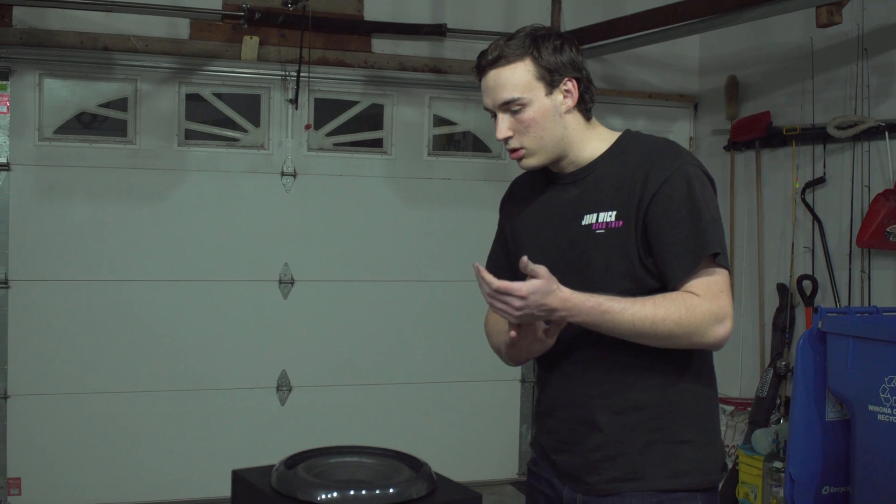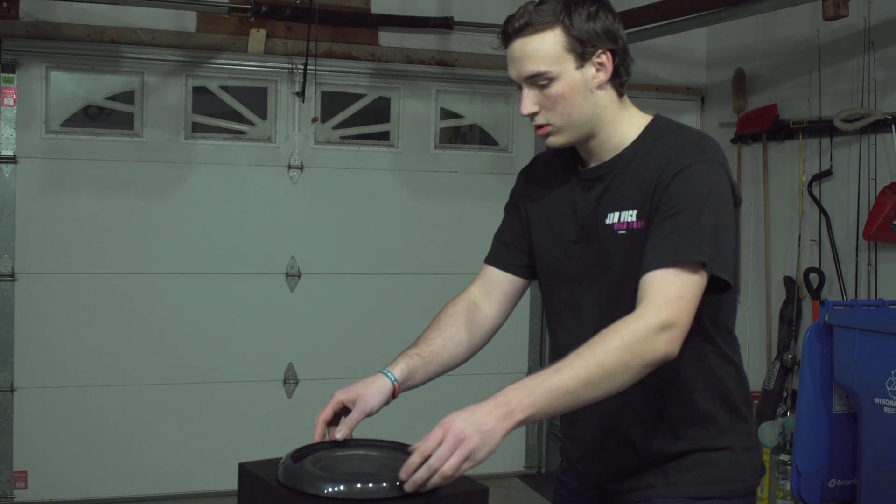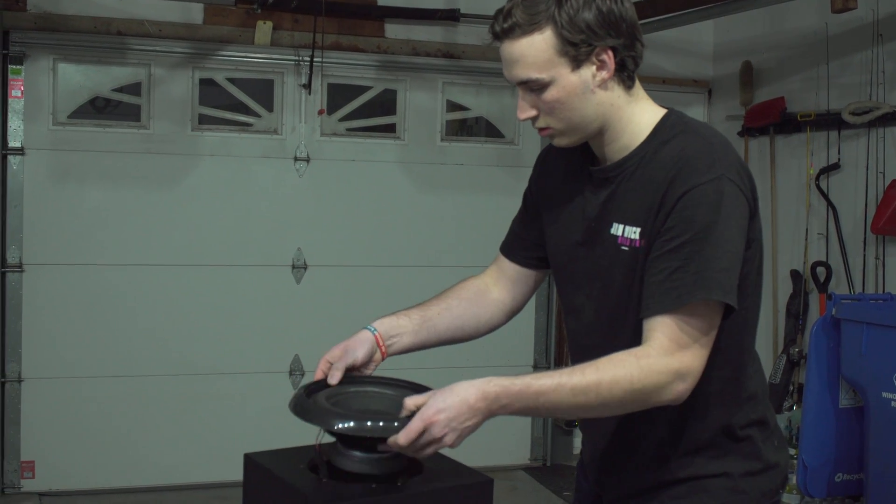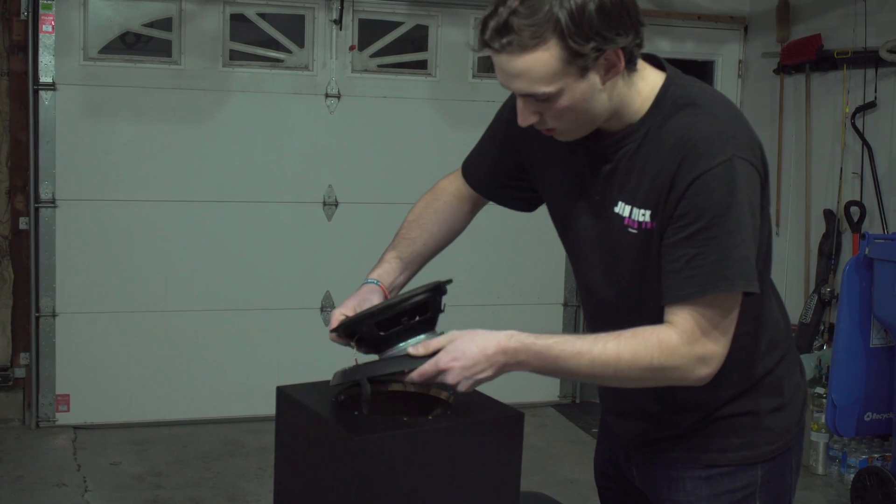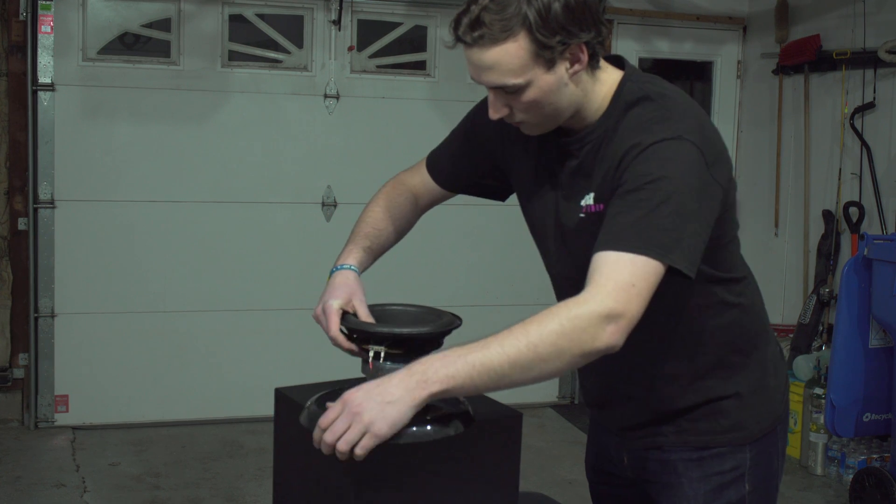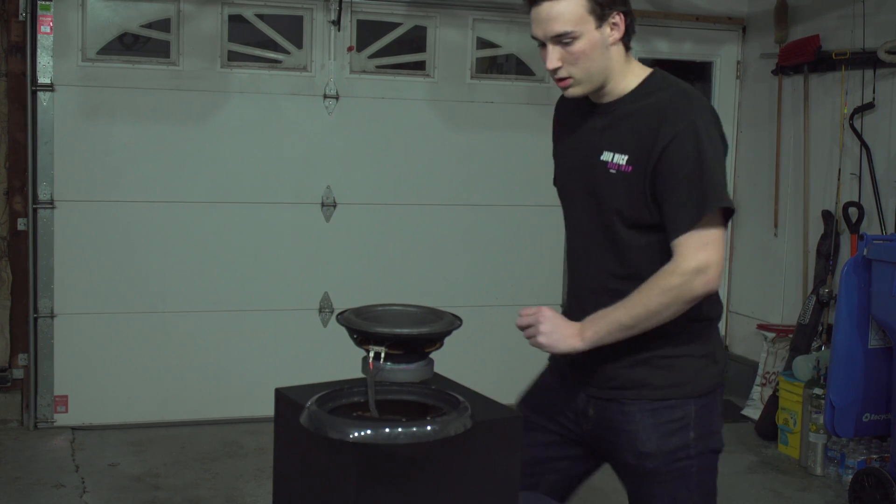Alright, so after you have finished unscrewing all eight screws, you want to gently pull off this little or grab it by this plastic covering and then you'll be able to pull out your subwoofer. Once you do that, you just want to set it to the side for now and we'll get into the next step.